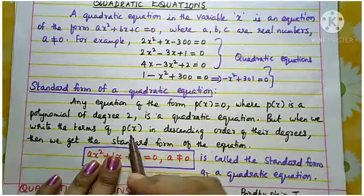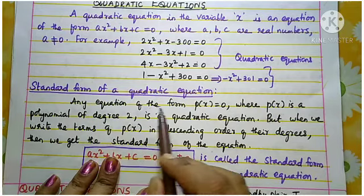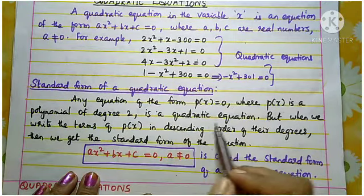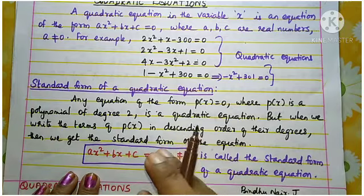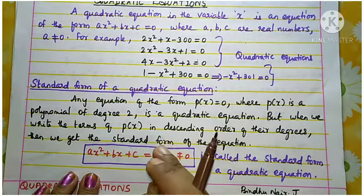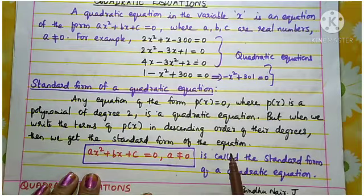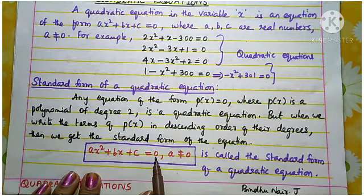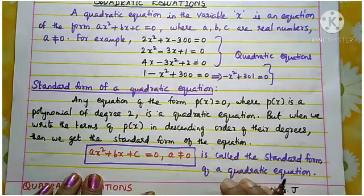The standard form of a quadratic equation means writing in descending order of the degrees of the terms. Any equation of the form p(x) equal to 0, where p(x) is a polynomial of degree 2, is a quadratic equation. In standard form, we write the x squared term first, then the x term, then the constant: ax squared plus bx plus c equal to 0, with the condition a not equal to 0.